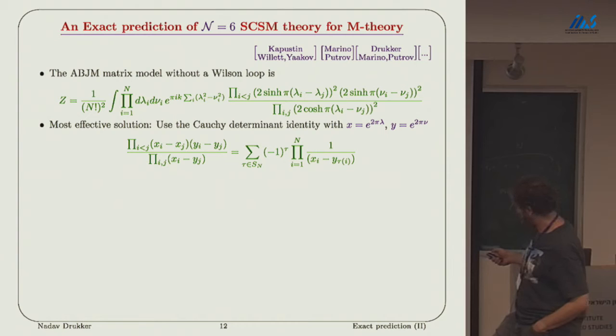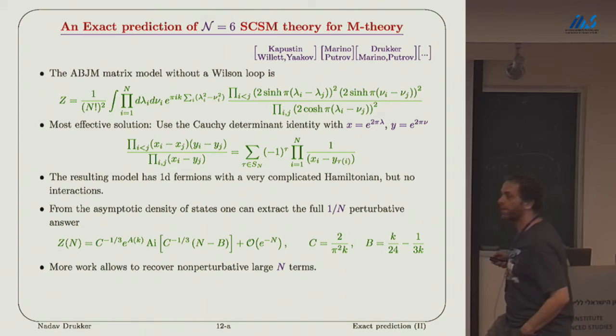To get the full large N perturbative result, almost immediately, what you do is apply this determinant identity of Cauchy, where you change it. You plug in X as an exponent, and Y as an exponent, to get it to become a hyperbolic determinant identity. This is the S3 partition function for ABJM.